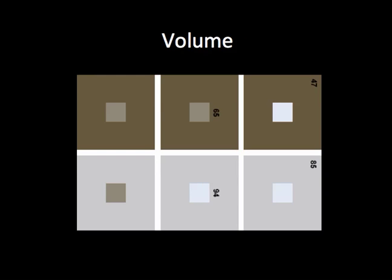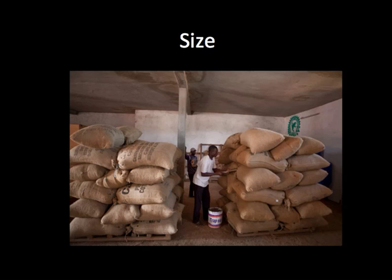Volume: primary colors and darker colors tend to appear heavier. If you want to show the size of something, you need to show it in relationship to something else — this is referred to as the contrast principle. To show the size of something, you have to compare it to something we can relate to.